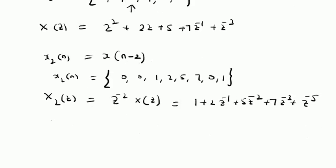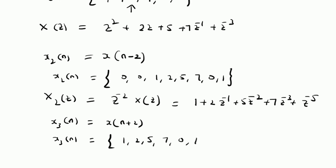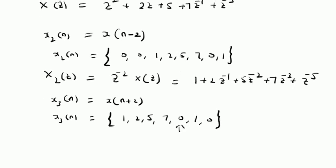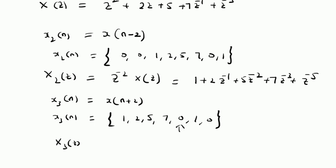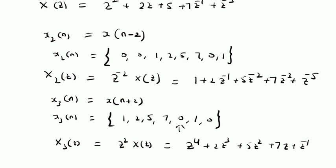Now consider the case where k is negative. X3 of n is equal to X of n plus 2. In that case X3 of n will be the sequence 1, 2, 5, 7, 0, 1, 0 and so on, with n equal to 0 located at the value 1. The Z-transform of X3 of n, that is X3 of z, is given by Z squared times X of z because k equals minus 2. By multiplying Z squared to the original result, we get Z power 4 plus 2Z cubed plus 5Z squared plus 7Z, and finally Z power minus 1.